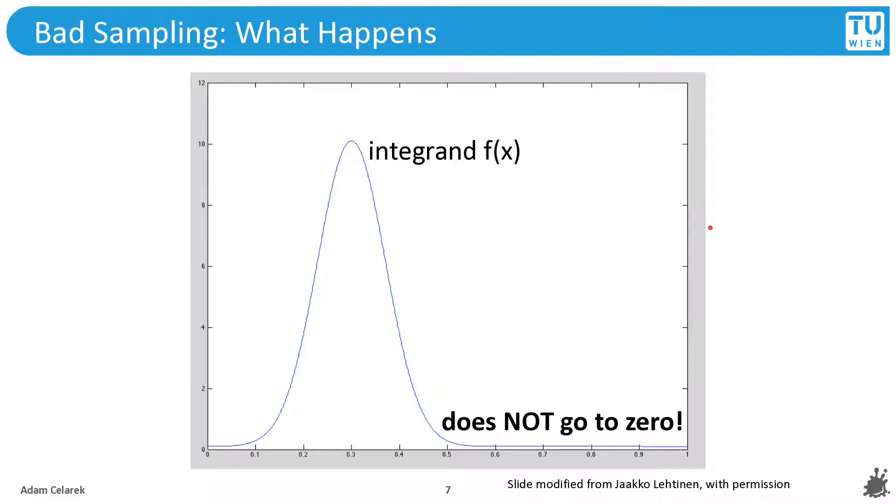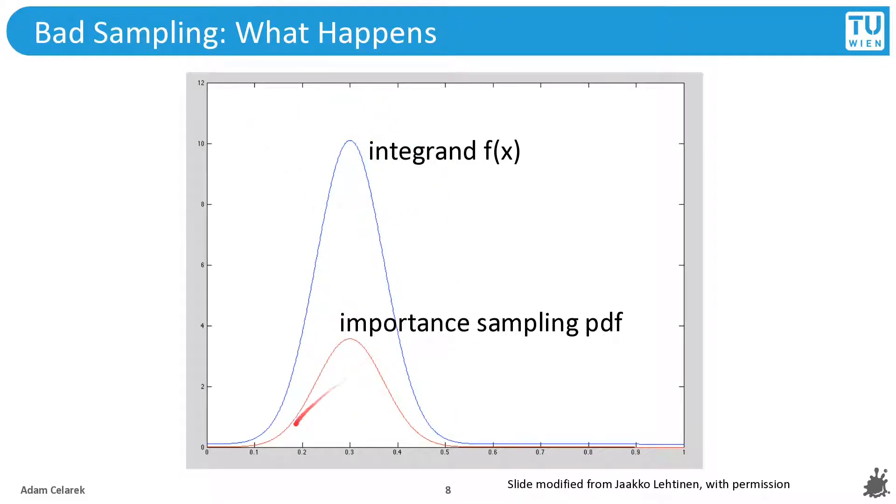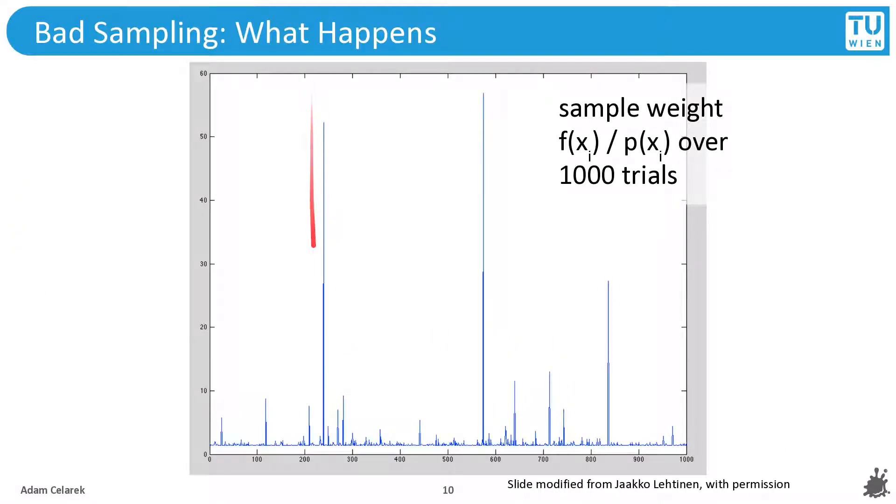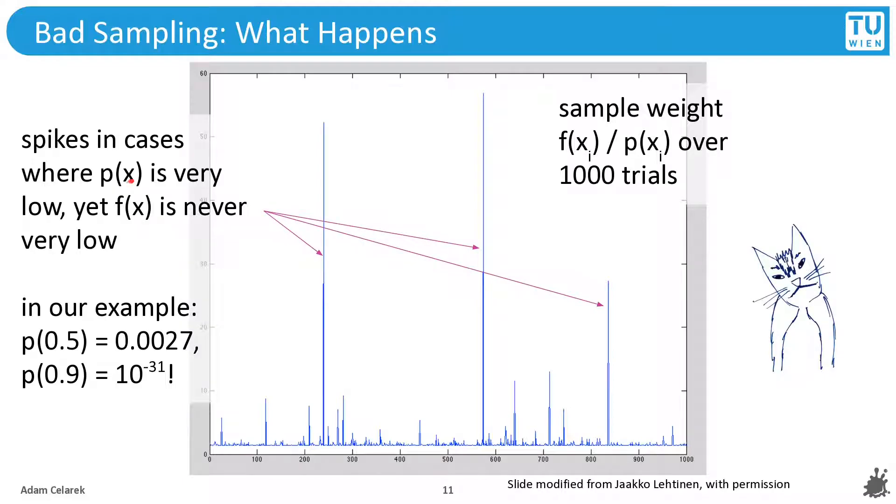Let's go back to a 1D case in order to understand what's happening. In here we have the function that we want to integrate. And this is the importance sampling of that function. You can see that the function doesn't go to zero, while the importance sampling has a very low probability. What then happens are these spikes. When the sampling probability of a certain sample is very low, the integrand has a significant contribution, this produces the spikes.